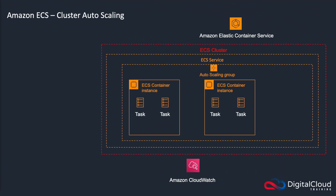In the last lesson we looked at how we could scale our tasks using an ECS service with auto scaling. With service auto scaling, we attached an auto scaling configuration to our ECS service, which used the application auto scaling service to add tasks. That's specific to the ECS service — it looks at utilization of tasks within that service and adds tasks when a certain metric is exceeded. A limitation is you might have multiple services or tasks running outside of services on your container instances, so you need to understand the overall utilization of your container instance and add new container instances as needed.